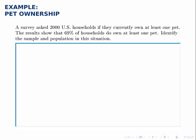Here we'll do a quick example where we identify the sample and the population in a survey. The question asks: a survey asked 2,000 U.S. households if they currently own at least one pet. The results show that 69% of households do own at least one pet. Identify the sample and the population in this situation.